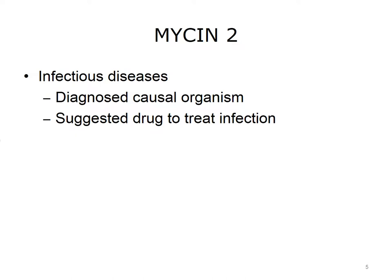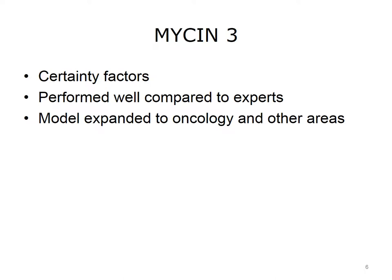Mycin's focus was infectious diseases of the bloodstream. Treating these infections requires the system to identify the causal organism and to recommend the appropriate drug to treat the infection. There were many challenges in developing expert systems in medicine, one of which is that almost nothing is 100% certain. In some diseases, certain symptoms appear most of the time but not always. Lab tests are not 100% accurate, and many symptoms are common to a wide range of diseases. Shortliff and his colleagues developed a way to deal with uncertainty, which they labeled certainty factors, so that the rules in the system did not have to rely on perfectly certain data. Mycin performed well compared to experts like Stanford's faculty. An oncology system was developed modeled on Mycin, and it was also expanded to other domains.